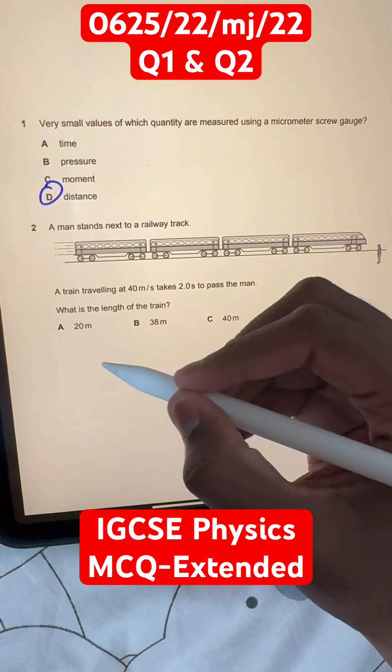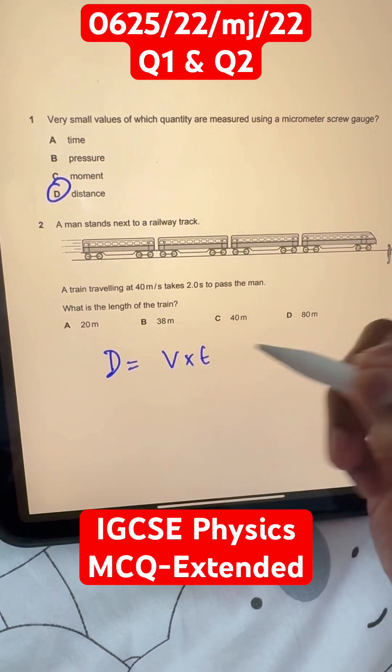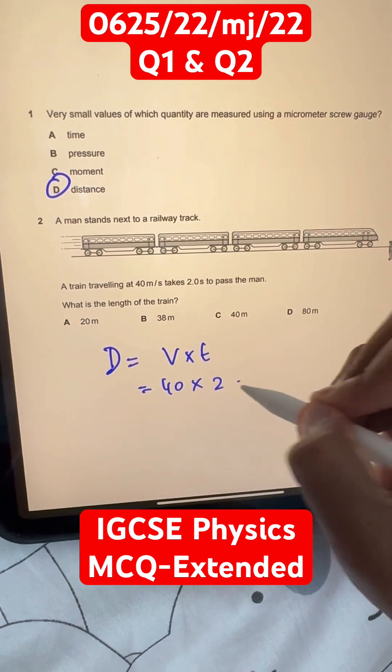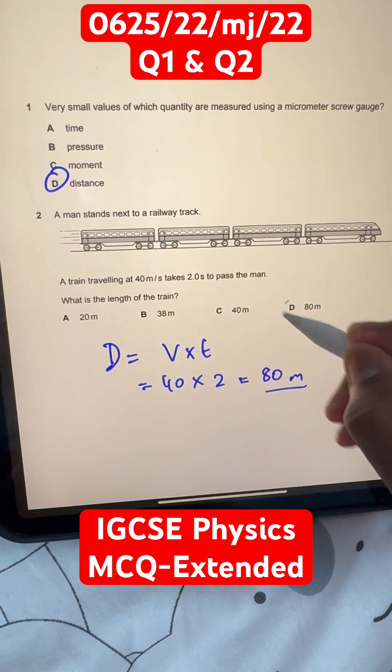We know that distance is equal to velocity or speed times time. So, velocity is 40 meters per second times the time, which is two seconds. That makes 80 meters as our answer, option D.